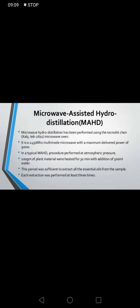Microwave assisted hydro distillation (MAHD) has been performed using a technology kit from Italy — a 2450 MHz multimode microwave oven with a maximum delivered power of 900 watts. In a typical MAHD procedure performed at atmospheric pressure, 100 grams of plant material were heated for 30 minutes with an additional 300 mL of water. This period was sufficient to extract all the essential oil from the sample. Each extraction was performed at least three times.